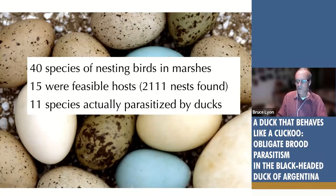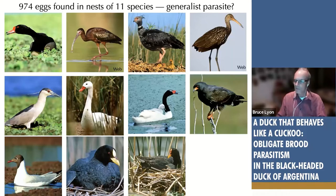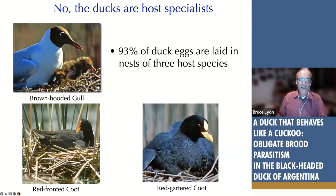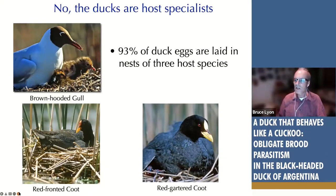This might make you think: aha, this is a generalist! And here are all the species in which we found black-headed duck eggs. In terms of presence or absence, 11 species looks good for this being a fairly generalized brood parasite. But the devil is in the details — the numbers of parasitism actually tell a different story. When you actually look at the counts, 93% of all duck eggs we found were in nests of just three host species: two species of coots and one species of gull.